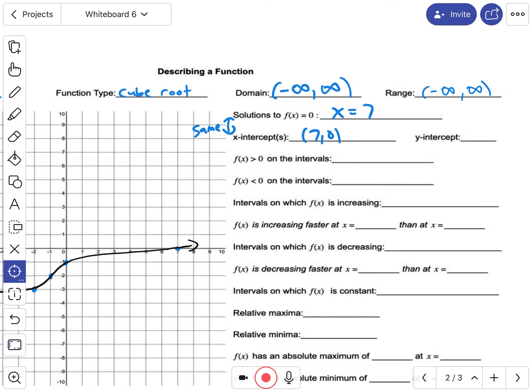The y-intercept we put here at negative 1, so that's going to be (0, -1).